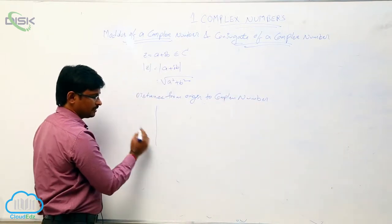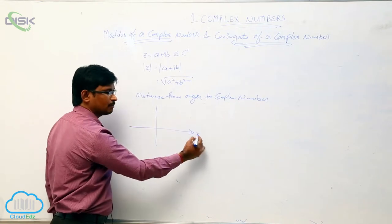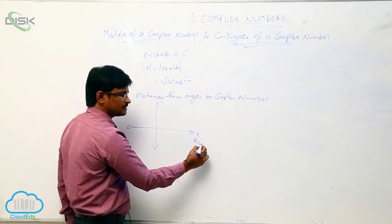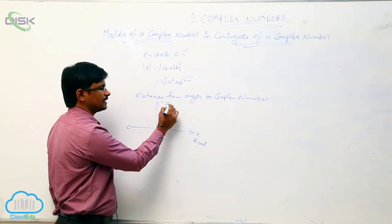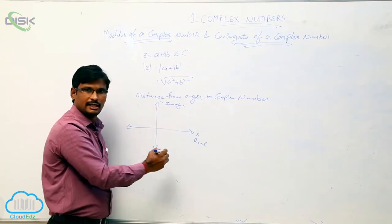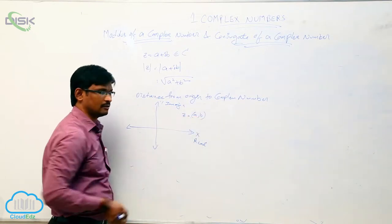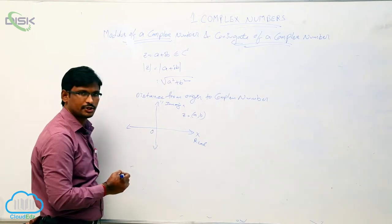If we see the Argand plane, we know that on x axis this is the real numbers and this one is imaginary numbers. If we take here z equal to a comma b, this is in first quadrant and here this is the origin.